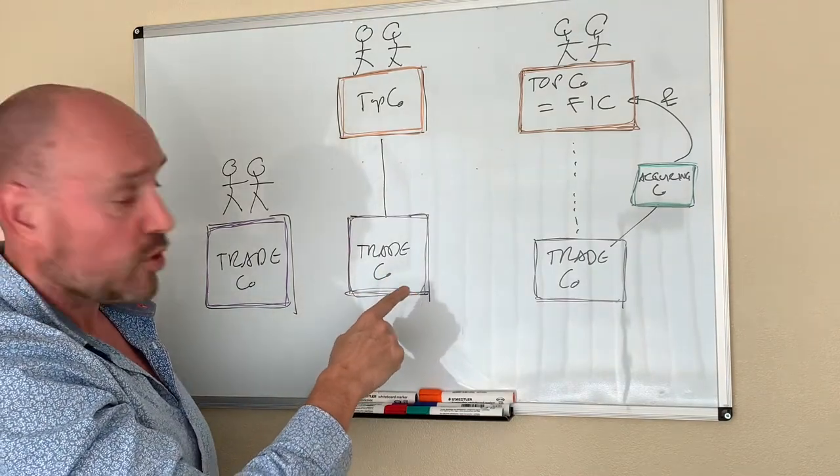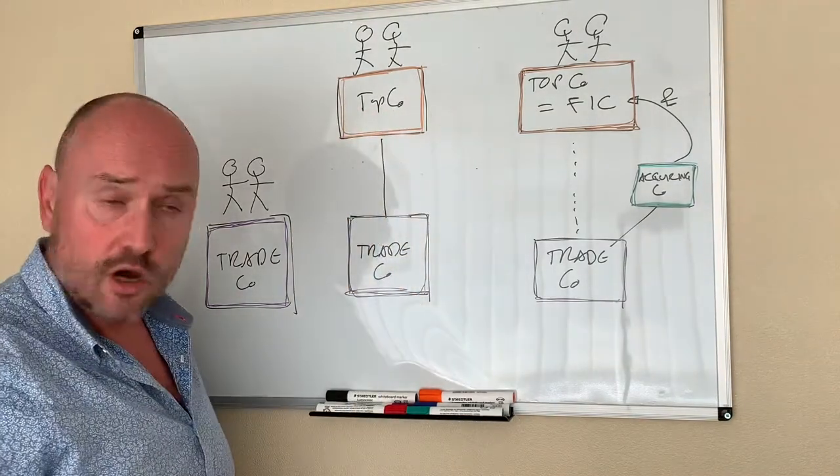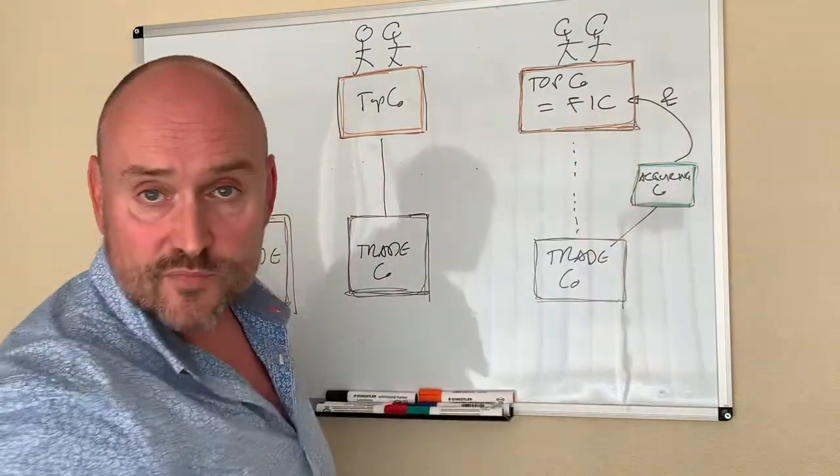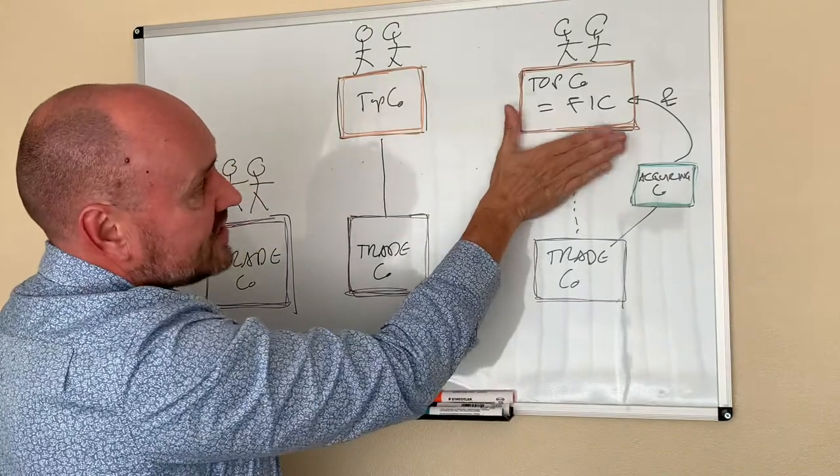cash, machinery, property, introduce TopCo, and then TradeCo is sold to AcquiringCo. Money comes into the TopCo, so that is now a standalone company,